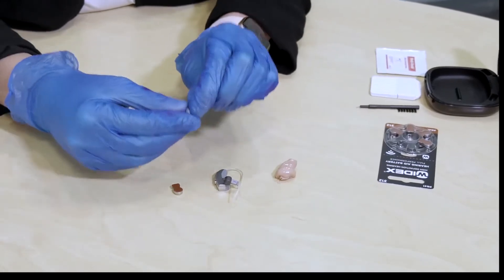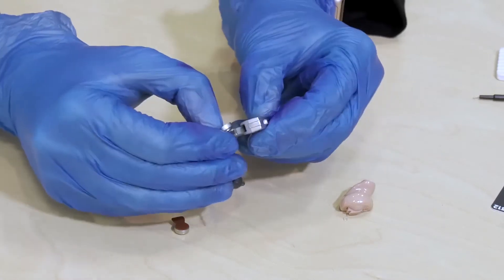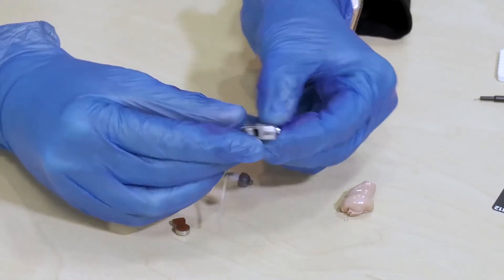Now you want to take the sticker off the battery, open up the battery door and just check that it wasn't just the battery that had run out.